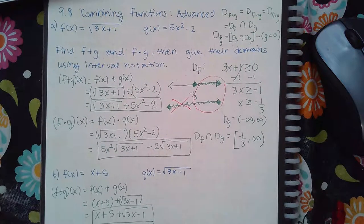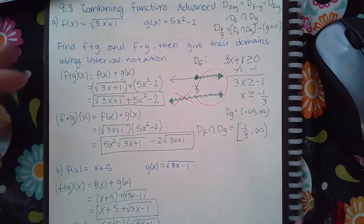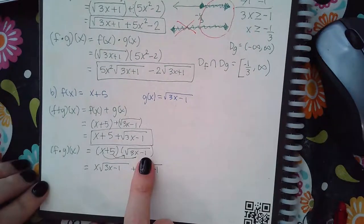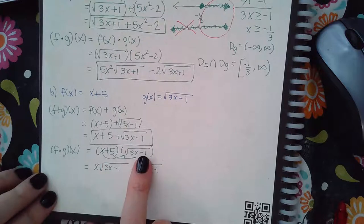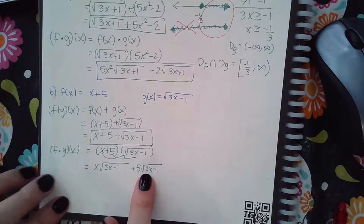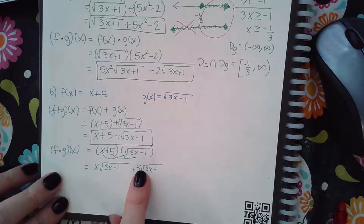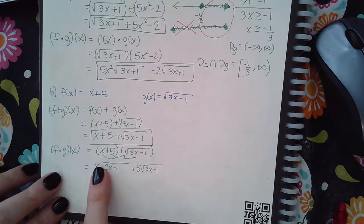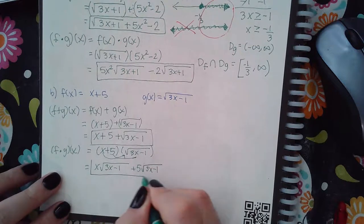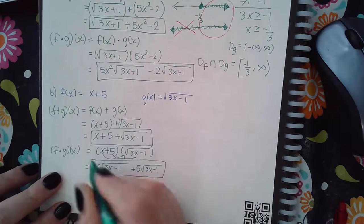These two terms are not like terms because this term has a variable outside the radical and this term has only a constant outside the radical, which means they are not like terms. We can't combine this any further, so that will be the final expression for f times g.